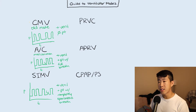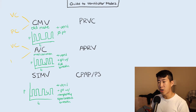One thing to note is that all of these different modes can be run in either a volume control or pressure control mode. So if a patient is on assist control, you decide whether to put them on volume control or pressure control. The same applies to SIMV — somebody could be on SIMV volume control or SIMV pressure control.